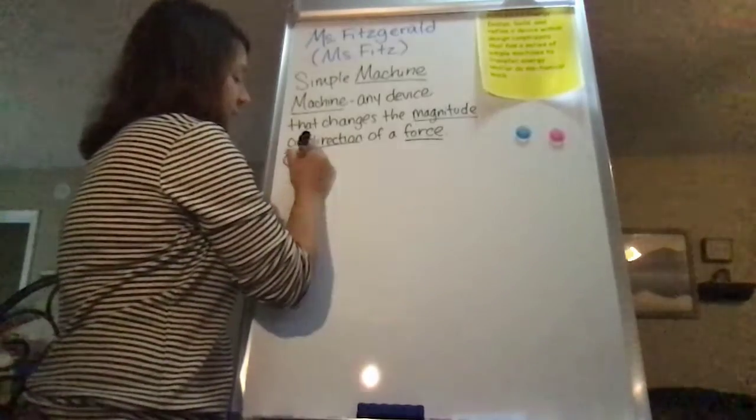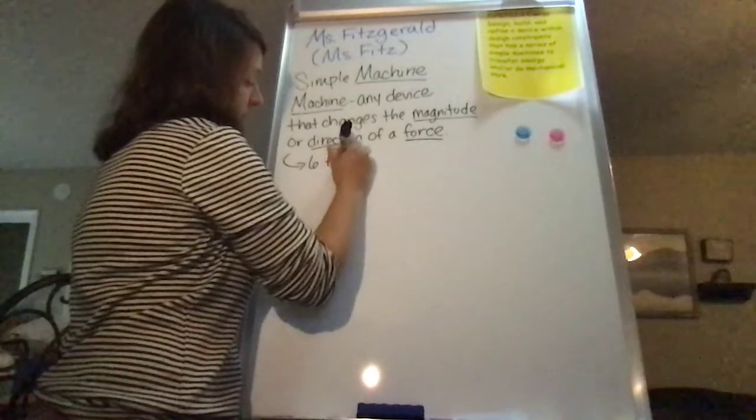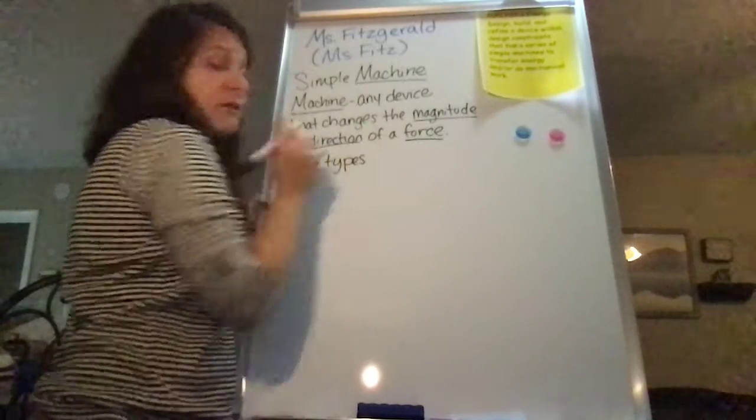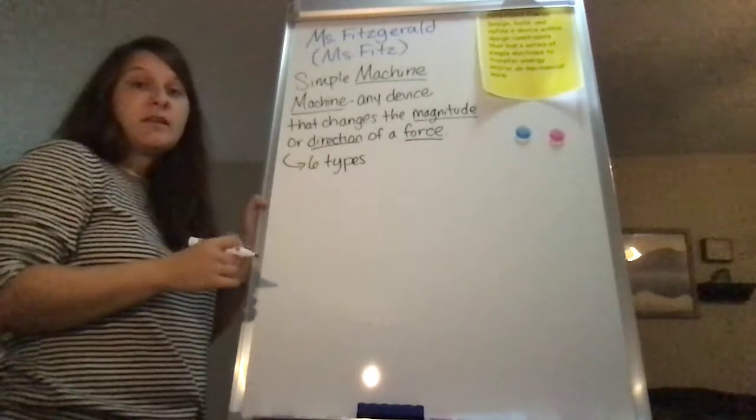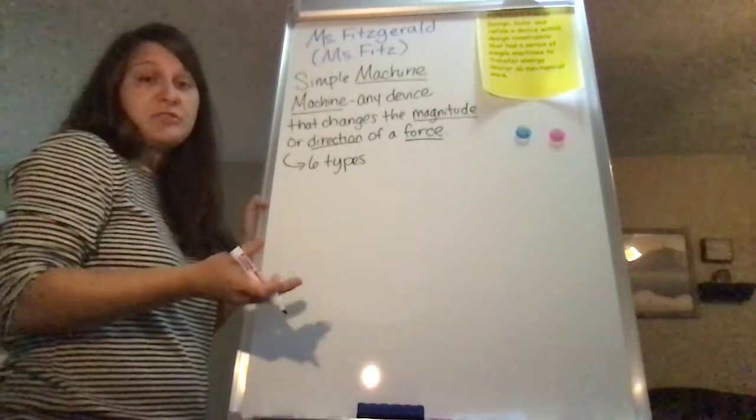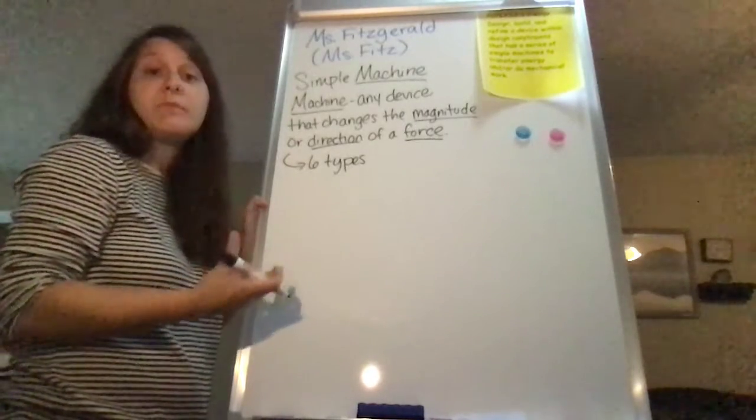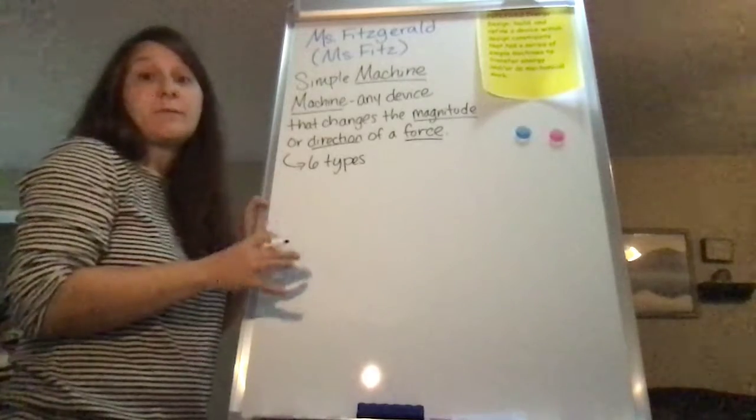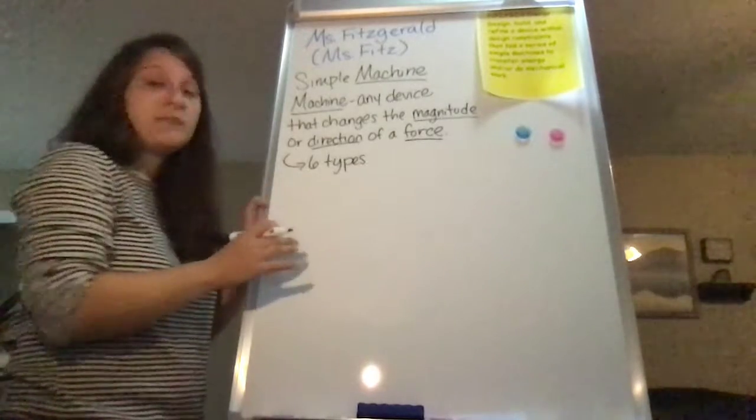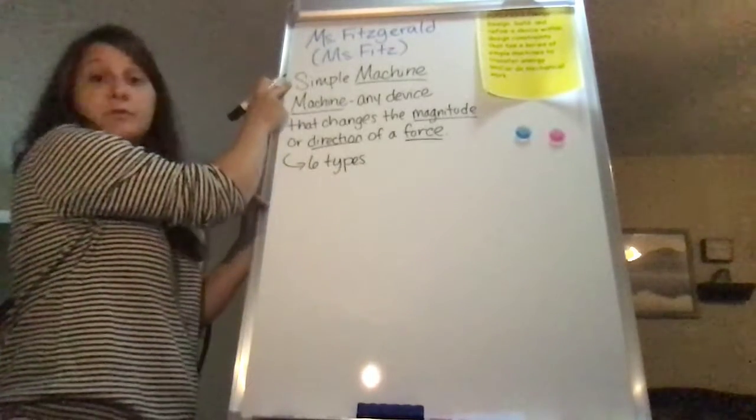There are six different types of simple machines. Now, a lot of tools, a lot of machines that we think of as machines are a combination of these six types of simple machines. So keep in mind that these six types are simple machines.